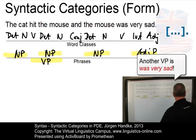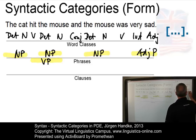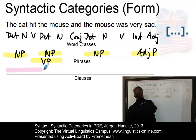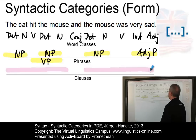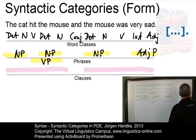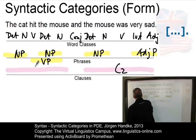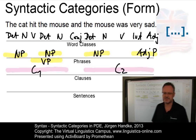And then in our sentence we have, of course, two clauses. Let's select the clauses here. This is the first clause: The cat hit the mouse. And then we have a second clause: The mouse was very sad. So, let's write down clause two and clause one. And the whole construction is, of course, a sentence.